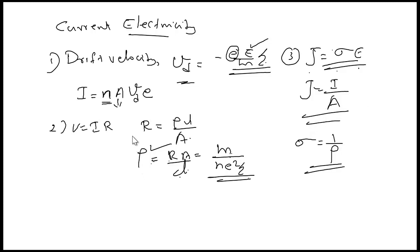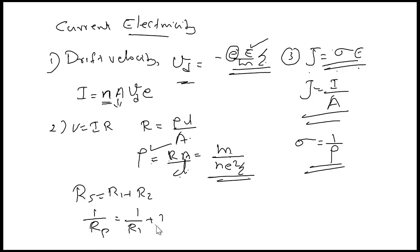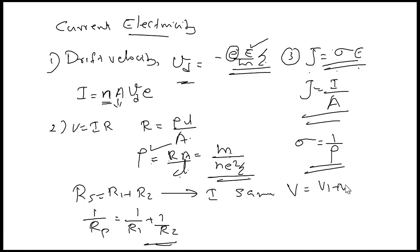Next, we learned about resistors in series and parallel. For series: Rs = R1 + R2. For parallel: 1/Rp = 1/R1 + 1/R2. In series, current remains the same and potential difference varies as V1 + V2. In parallel, voltage remains the same and current divides among resistors as I1 + I2.